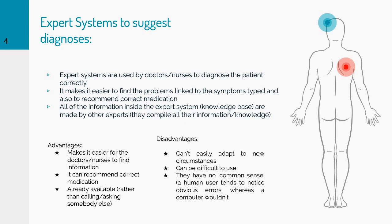The advantages of using expert systems to suggest diagnosis are: it makes it easier for doctors and nurses to find information, rather than typing it into a normal internet search engine where not all information can be accurate. It also saves time compared to calling someone who is an expert in finding symptoms and diseases. It can also recommend correct medication and is already available to them rather than asking somebody else.